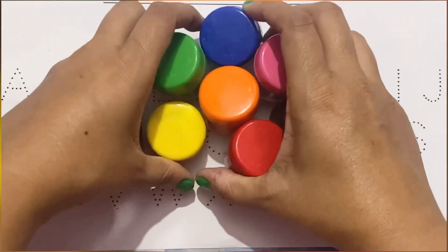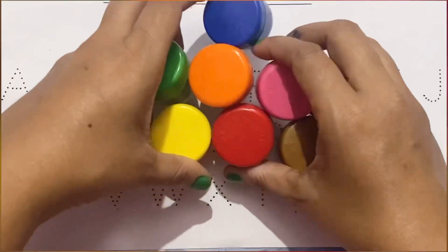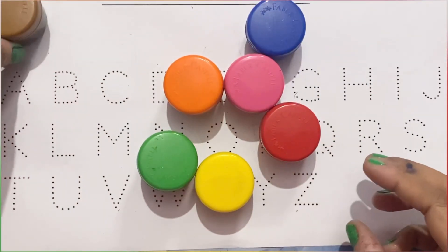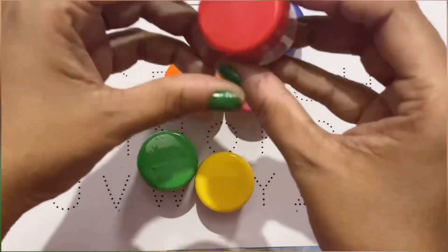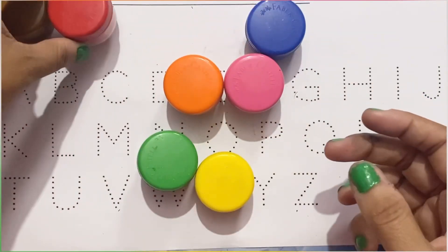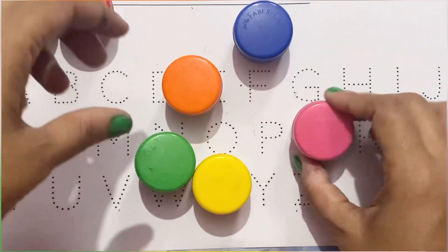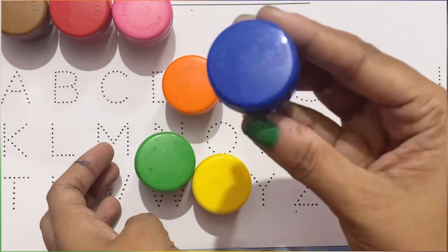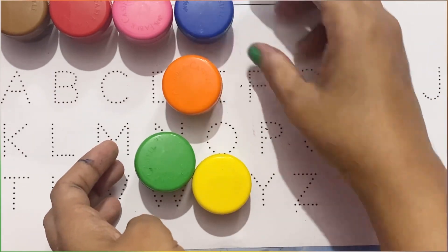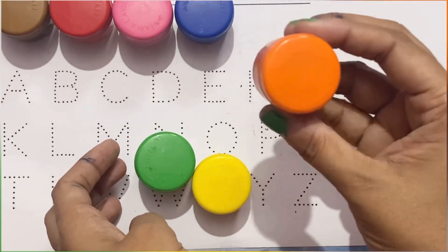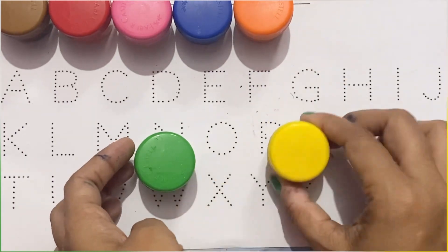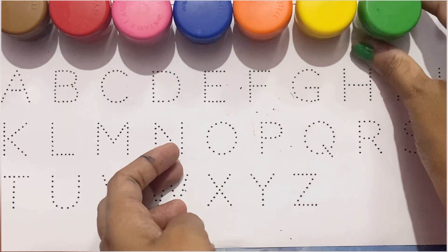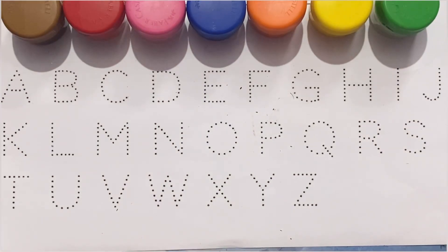Let's learn ABC with the help of different colors. We have brown color, red color, pink color, blue color, orange color, yellow color, and green. Now let's start ABC.